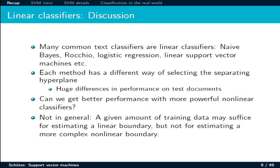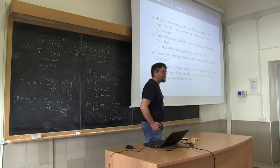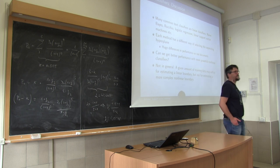Many of our classifiers are linear ones — Naive Bayes, Rocchio, logistic regression — and you have different ways or mechanisms to separate the two classes, namely to identify the hyperplane. The question is to what extent we can employ non-linear classifiers in order to improve the performance.